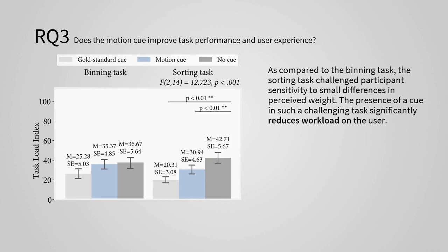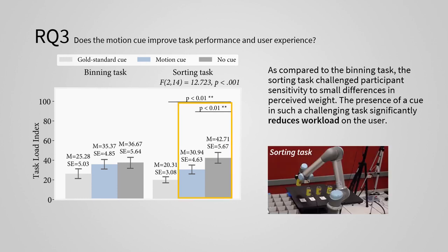In terms of user experience, we found that in the sorting task, the presence of the motion cue significantly reduces workload on the user. This may be because, as compared to the binning task, which was a binary classification, the sorting task challenged participant sensitivity to small differences in perceived weight.